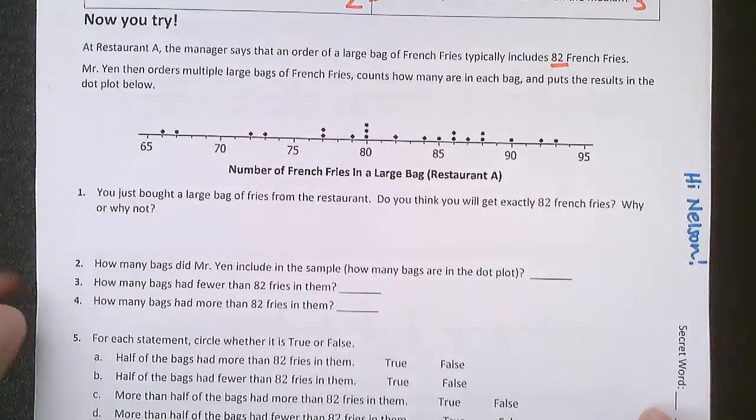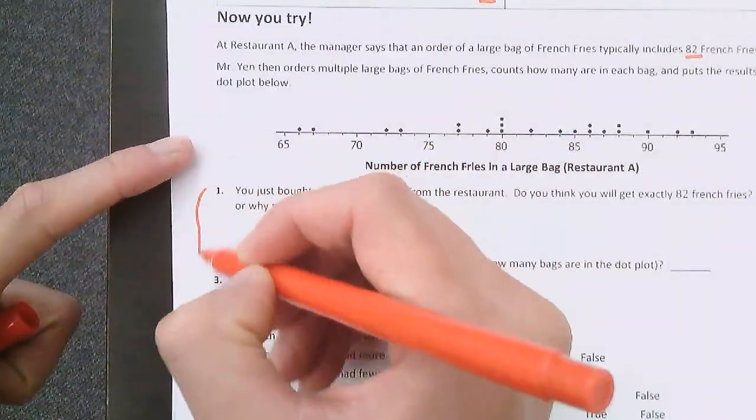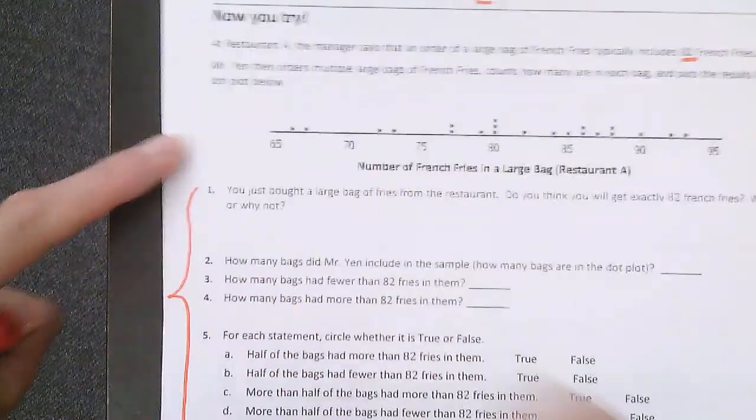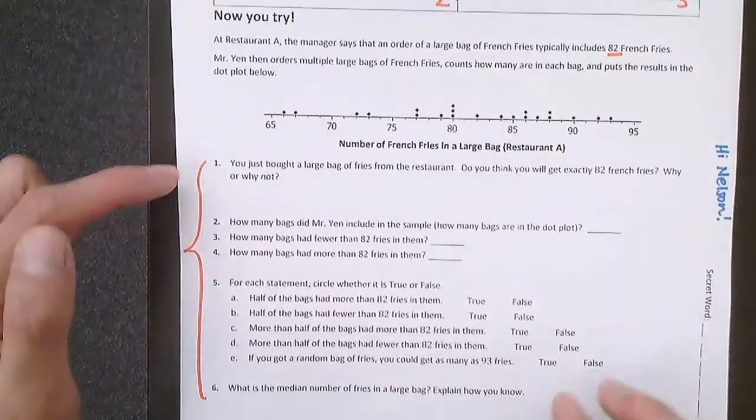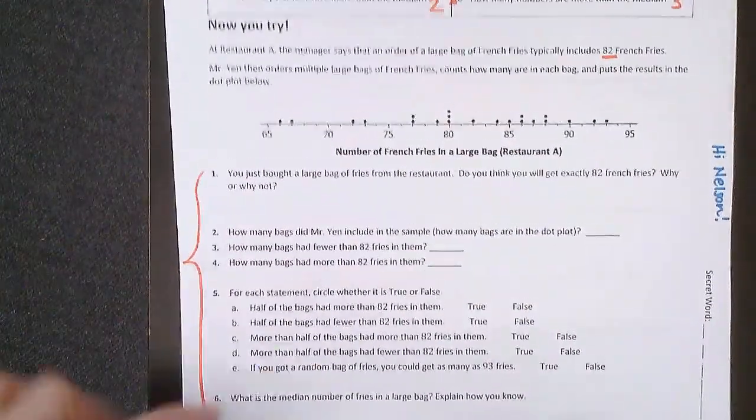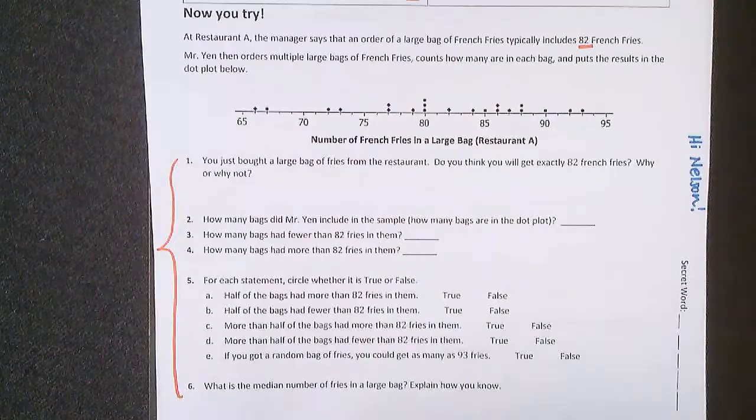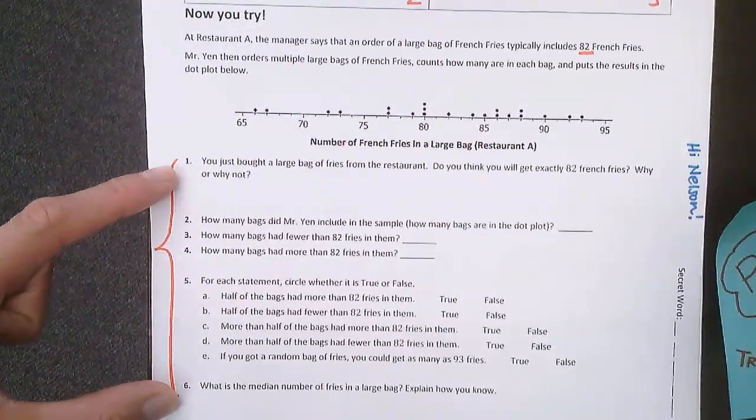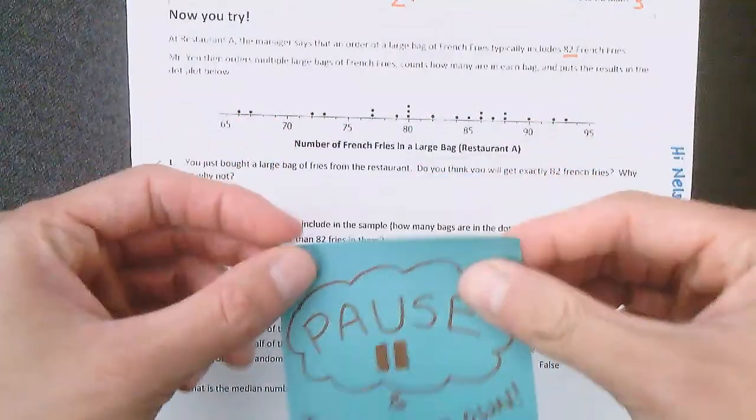So then what I want you to do is, the rest of this here, you should be able to answer 1 through 6 now, based off of what we learned right here, on your own. So I'm going to have you pause, and then try 1 through 6 on your own first, and then when you are done, you can resume the video to check your work.